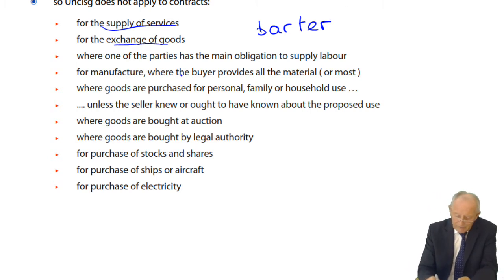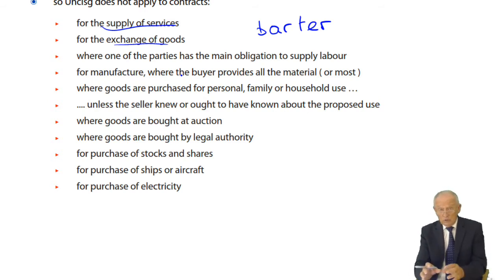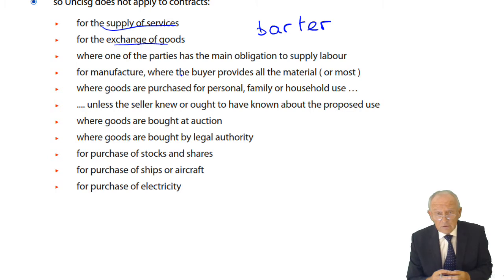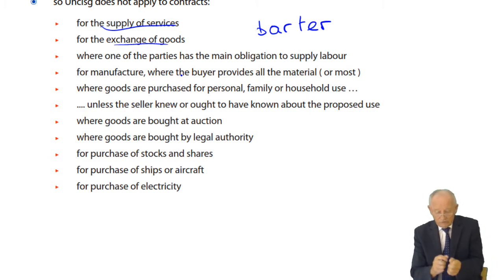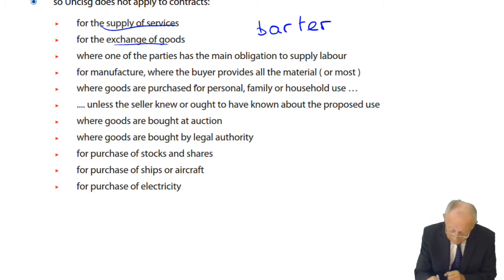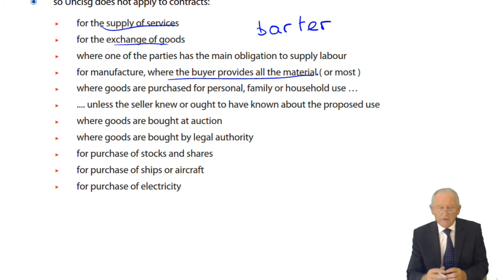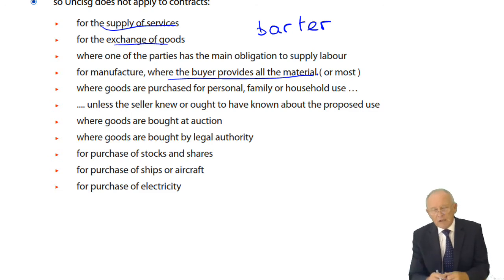Also excluded is where one of the parties has the main obligation to supply labour, or where the buyer provides substantially all the material. In that case, all you're really buying is construction services — you provide all the material and the other party provides the knowledge and skills to construct it, such as building a nuclear power station.